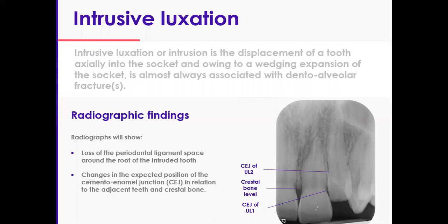That is a good radiograph to show how to detect these things. For example, if you want to see how much of the tooth is intruded and the severity, look at the crestal bone, adjacent tooth, the CEJ of the tooth that is intruded and also the neighboring CEJ just to work out roughly how much of an intrusion you've got and whether it's a mild, moderate, or severe form of luxation, which will help you in the management.